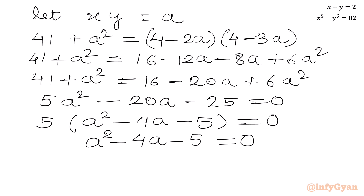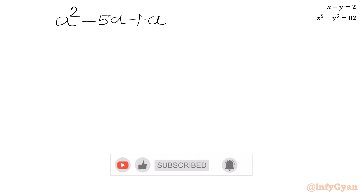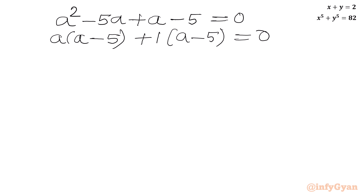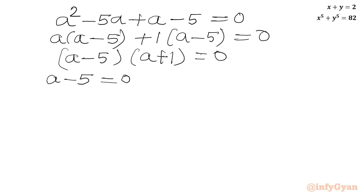I can use the method of factorization. I will split minus 4a as minus 5a plus a, then we have minus 5 equal to 0. From the first two terms take a common, giving a minus 5 in the bracket. From the last two terms take 1 common, giving a minus 5 in the bracket, equal to 0. So we get a minus 5 times a plus 1 equal to 0. By the zero product rule, either a equals 5 or a equals negative 1.